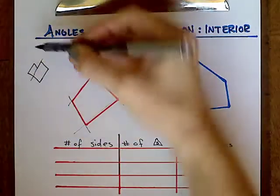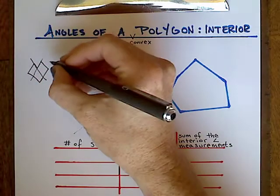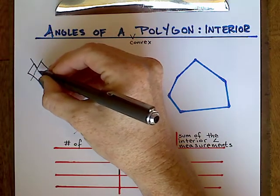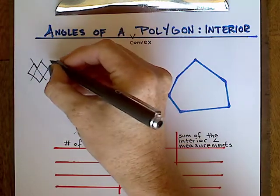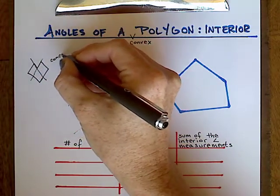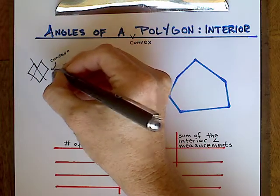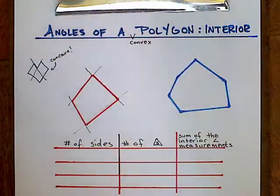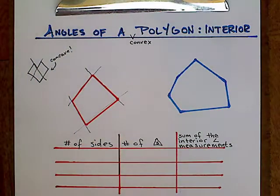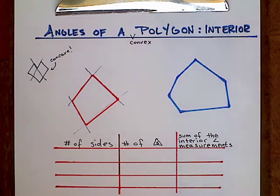Here you can see I drew an example where if I extend those two sides, the line segments go inside the polygon. That's called a concave polygon, which is a polygon we rarely talk about in geometry. So here we're only talking about convex polygons.